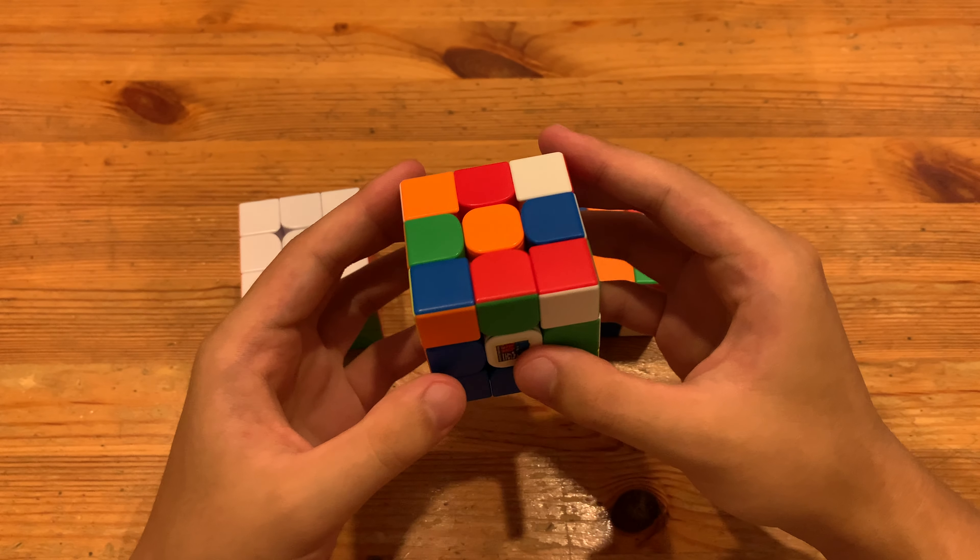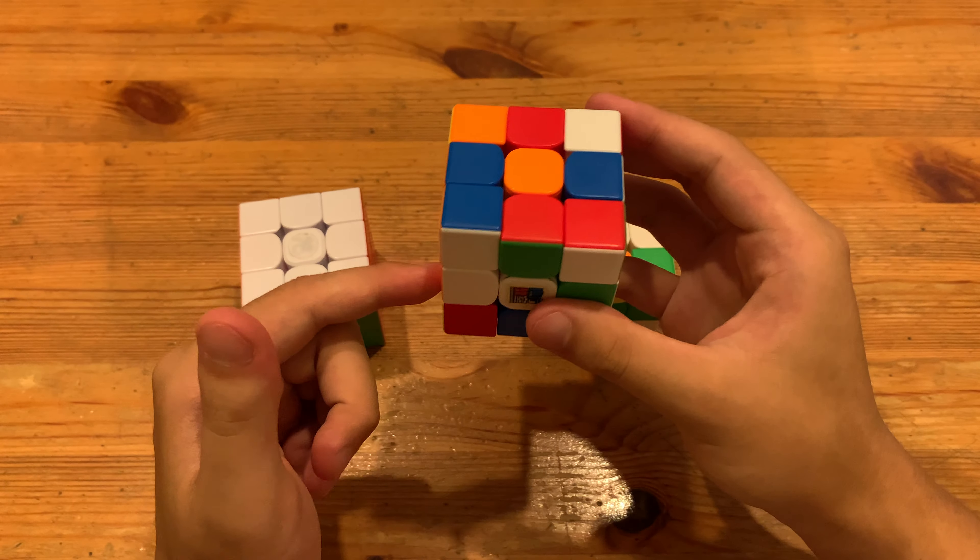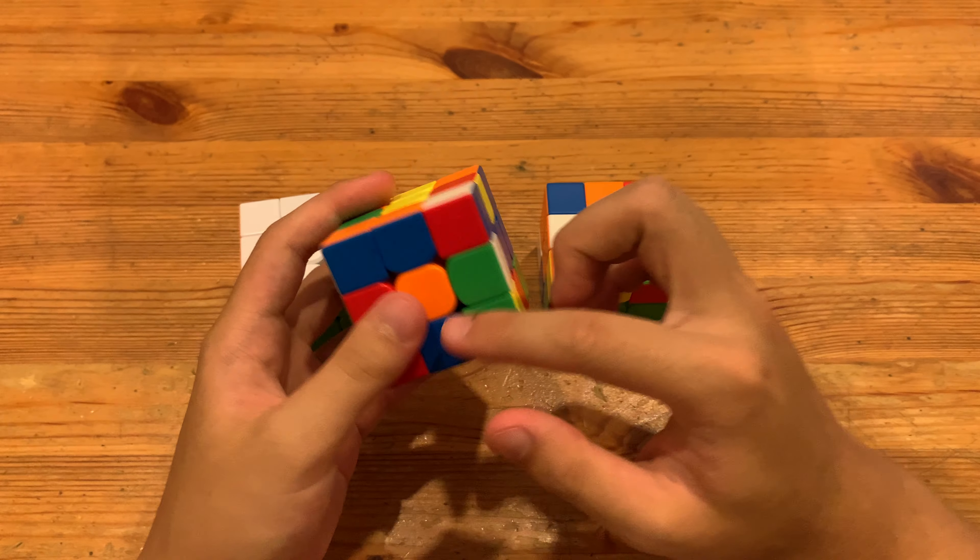And here what I have is I can do another multi-slot here. So we'll do L' to, not multi-slot, free pair. L' F and then R to enter these three cross edges.